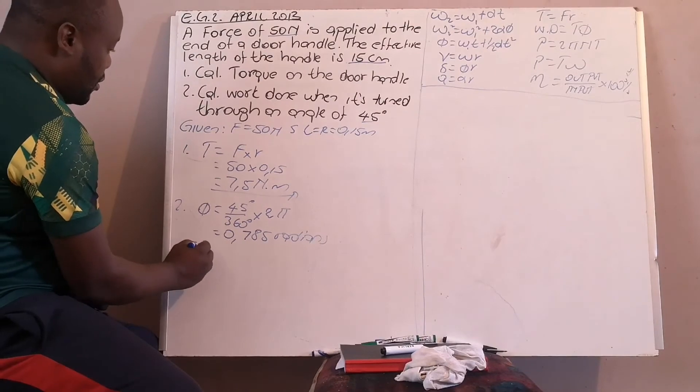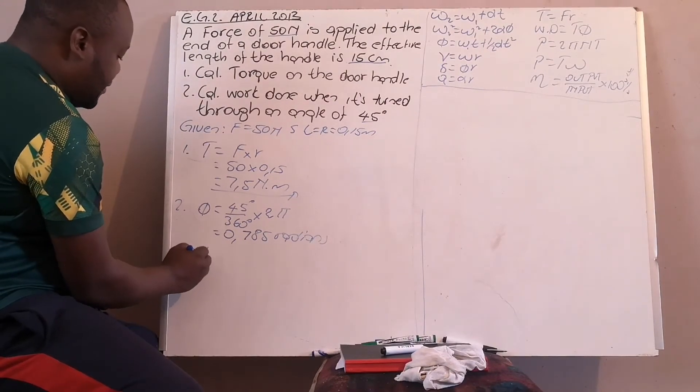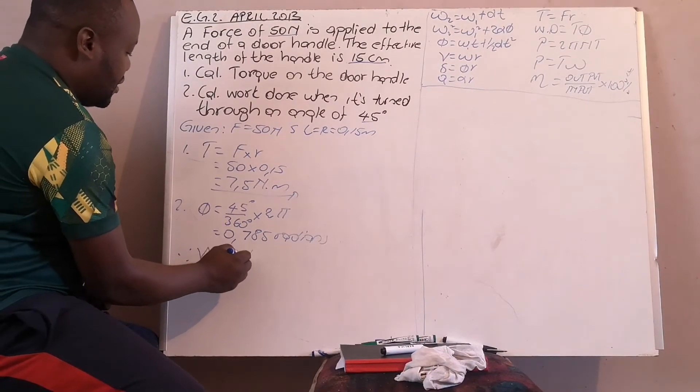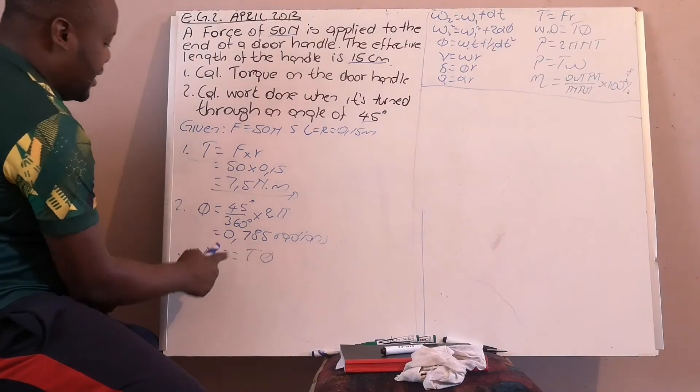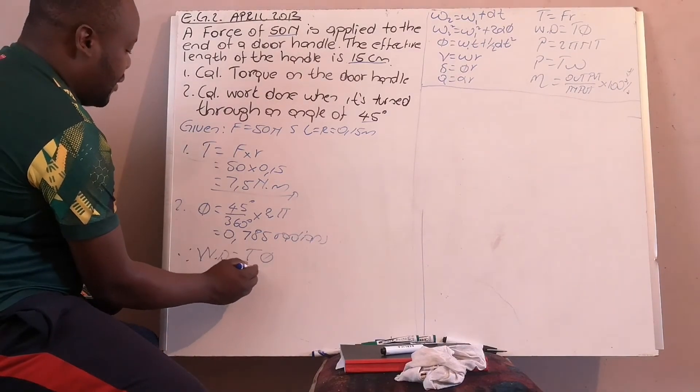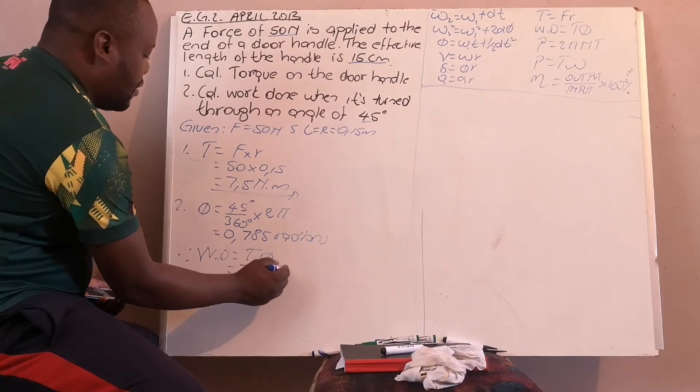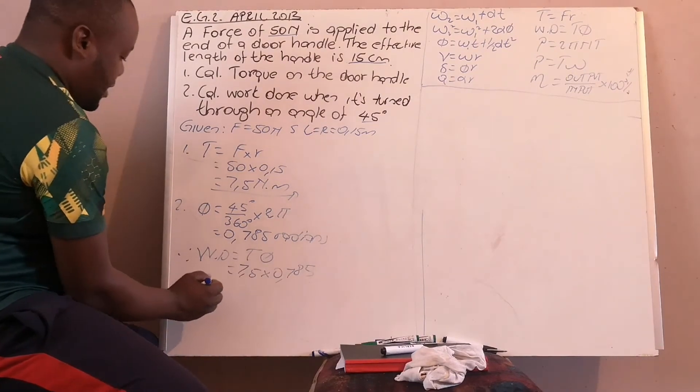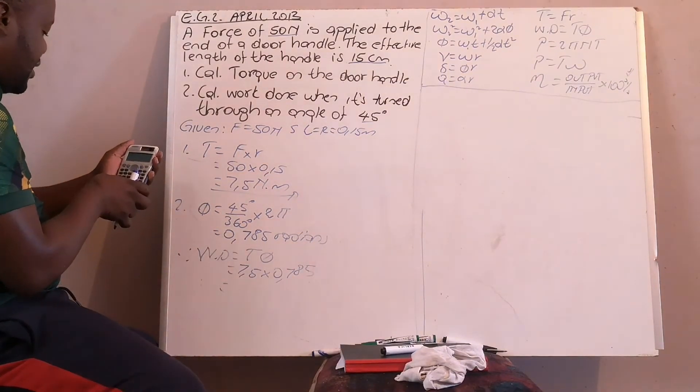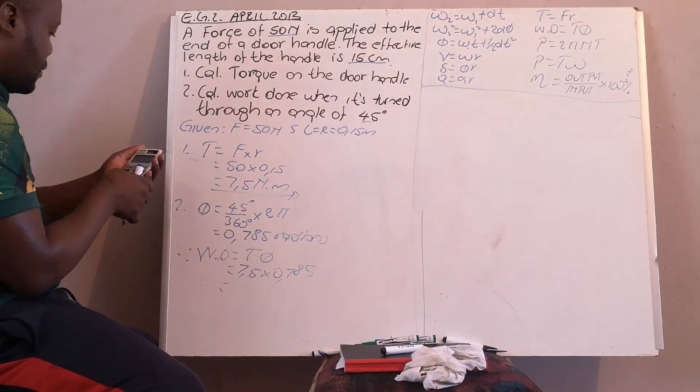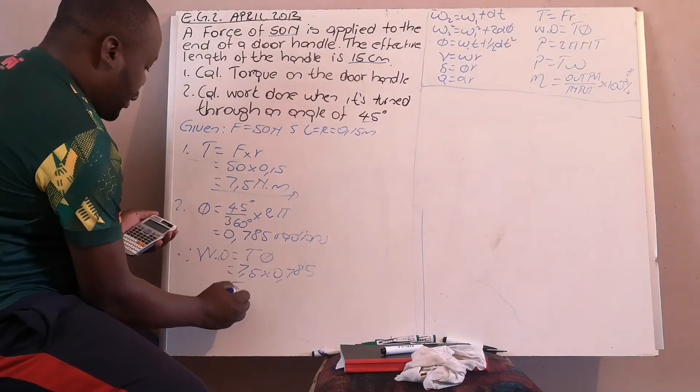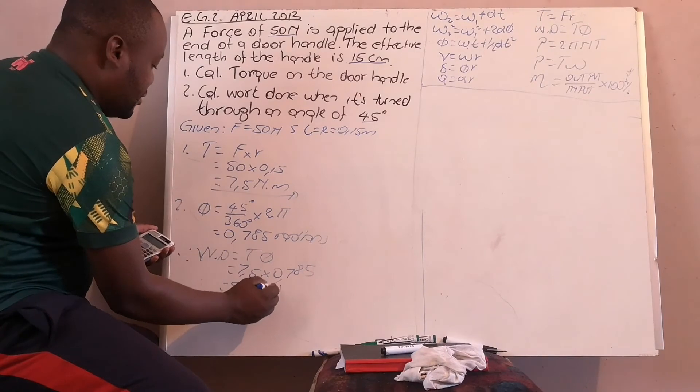Therefore, your work done is torque multiplied by your radians, which is 7.5 multiplied by 0.785. So your work done will be 5.89 joules.